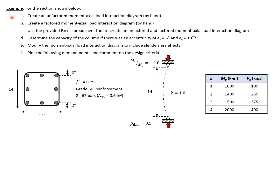In this example problem, we will first create an unfactored moment-axial load interaction diagram by hand for the section shown here. Then we'll add resistance factors to create a factored moment-axial load interaction diagram. We'll use a provided Excel spreadsheet tool for both diagrams, determine the capacity of the column with eccentricity in both X and Y directions for biaxial loading, modify the diagram to include slenderness effects, and plot demand points on our design curve.